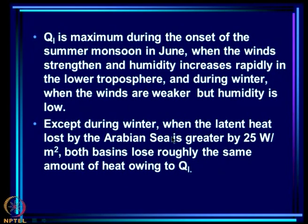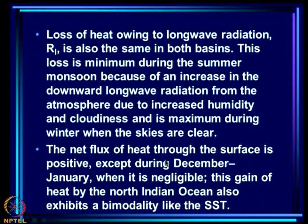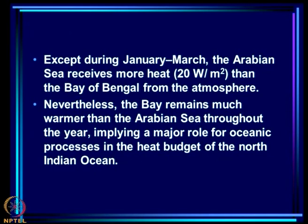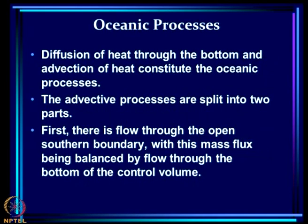Except during winter, both basins lose roughly the same amount of heat as latent heat loss. Long wave radiation loss is also very similar in both basins — minimum during the summer monsoon because of increased downward longwave radiation from the atmosphere due to increased humidity and cloudiness, and maximum during winter when skies are clear. The net flux of heat through the surface is positive except during December-January. Except during January to March, the Arabian Sea receives about 20 W/m² more heat than the Bay, yet the Bay remains much warmer, implying a major role for oceanic processes in the heat budget.